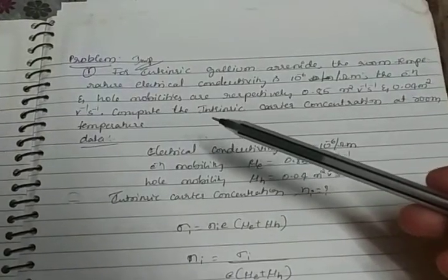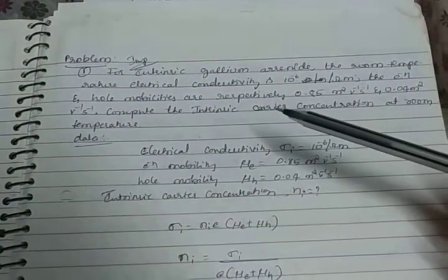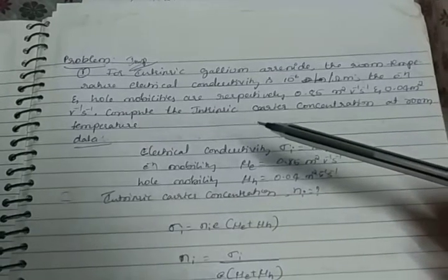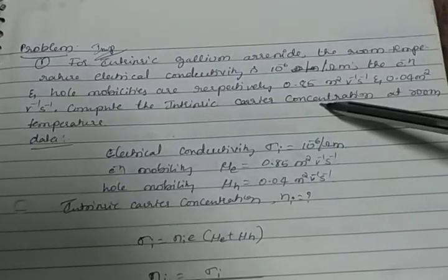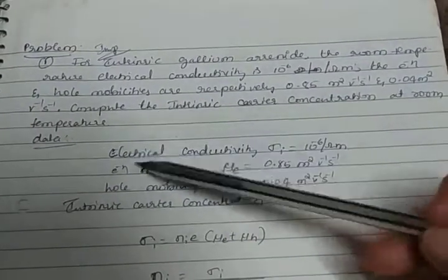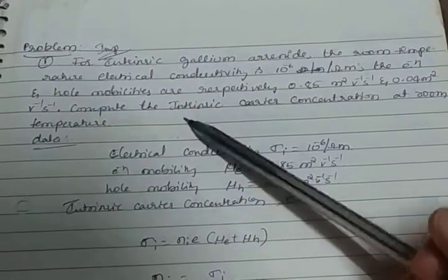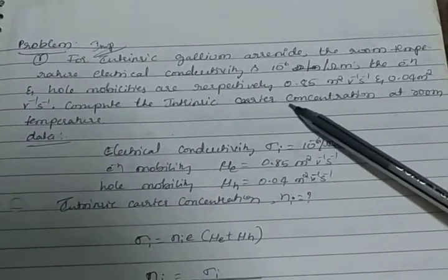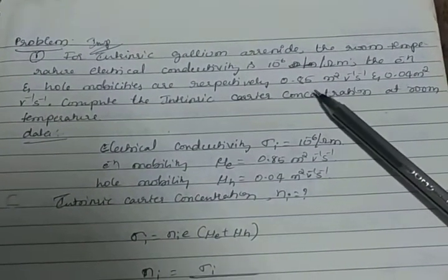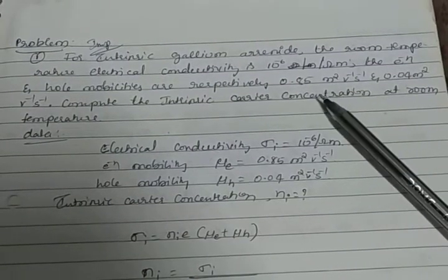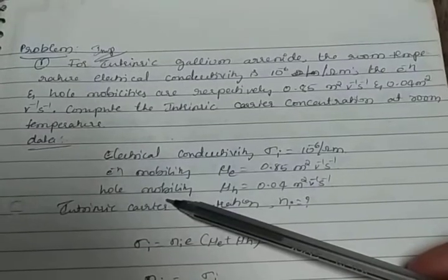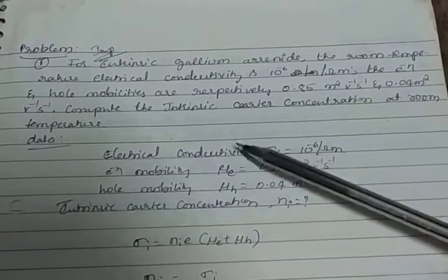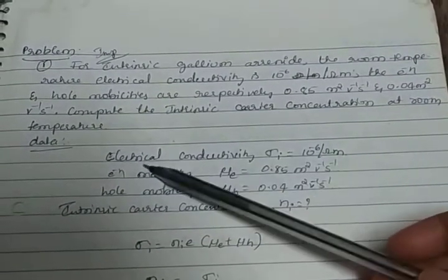For intrinsic gallium arsenide, the room temperature electrical conductivity is 10^-6 per ohm meter. The electron and hole mobilities are respectively 0.85 m²/Vs and 0.04 m²/Vs. Compute the intrinsic carrier concentration at room temperature.